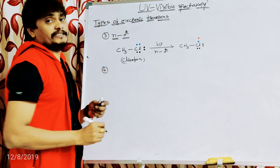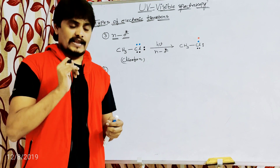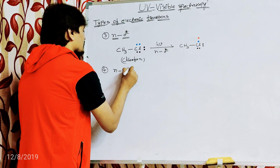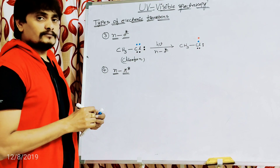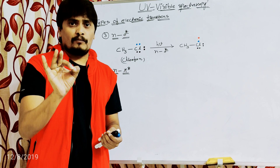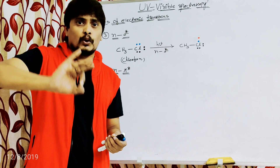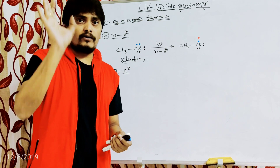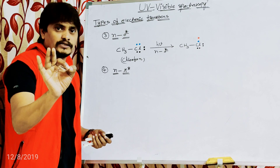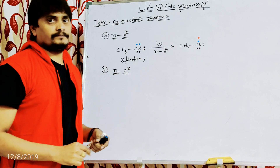The last transition, with the least energy, is n to pi star. The name itself suggests that this transition involves the excitation of electrons present in the non-bonding molecular orbital to the pi anti-bonding molecular orbital.